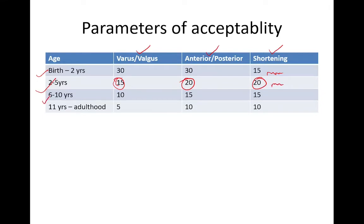From 6 to 10 years, a varus/valgus deformity of less than 10 degrees, AP deformity of less than 15 degrees, and shortening of less than 15 mm is acceptable. From 11 years to adulthood, AP deformity should be less than 10 degrees and shortening should be less than 10 mm.